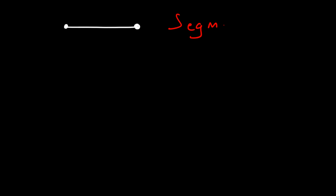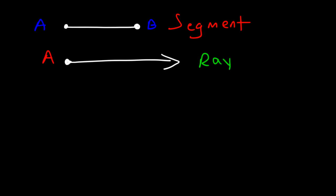You need to know what a ray is. Here's a basic geometry review. A segment connects two points — it has two endpoints, in this case A and B. A ray has one endpoint, and the other side goes on forever. A line has no endpoints — a line extends forever in both directions.